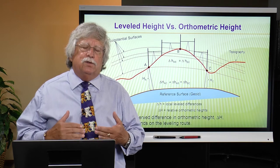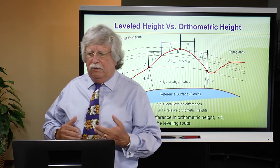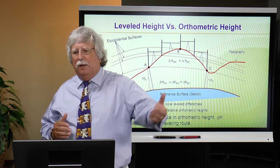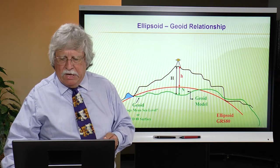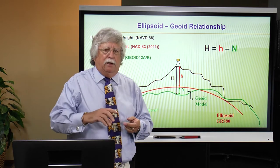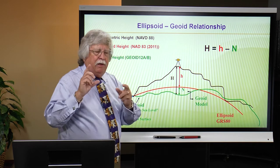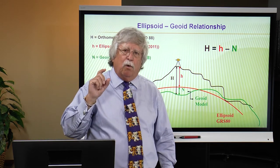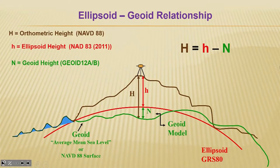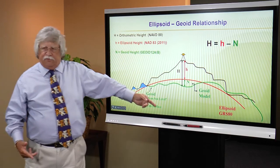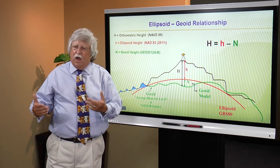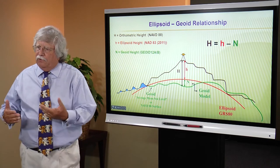Generally not a problem if you're going just a few kilometers. Let's bring this together into a picture that includes the reference ellipse. Remember, the ellipsoid height is the native height you acquire when performing any GNSS observations — it's a three-dimensional tool: latitude, longitude, and ellipsoid height. Those ellipsoid heights are referenced to the mathematical surface for the size and shape of the Earth and have nothing to do with the Earth's gravity field.